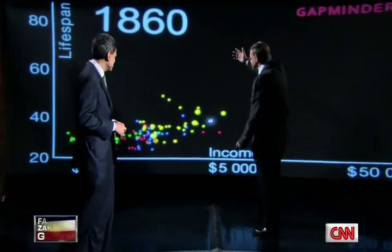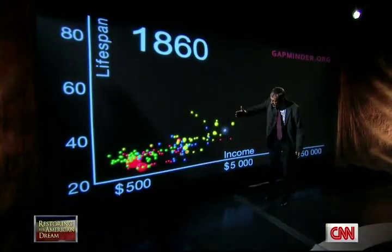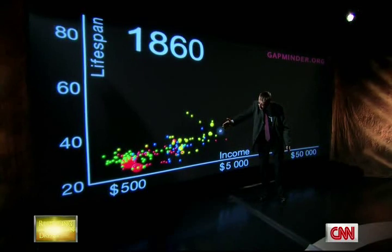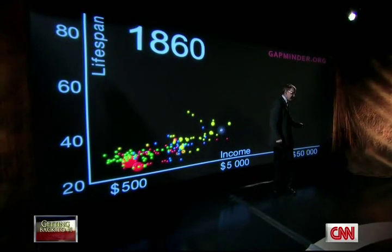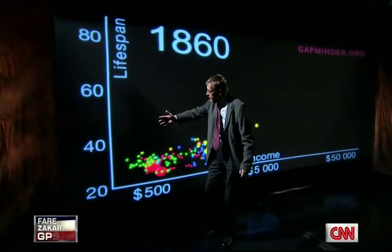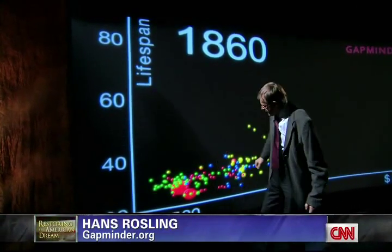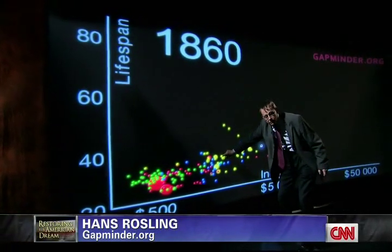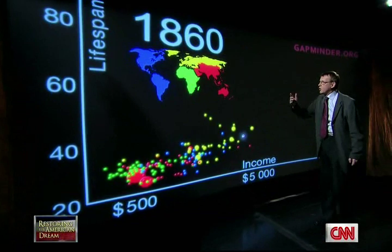This is the world in 1860. Each bubble is a country. This axis down here shows wealth — income per person — $500, $5,000, and $50,000. And this axis is health: the length of life from 20 years all the way to 80 years. And the size of the bubbles shows the size of the population.